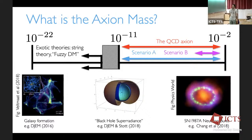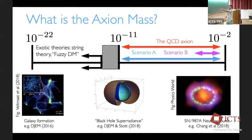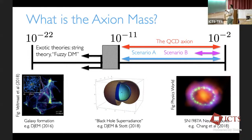For the QCD axion, M is fixed uniquely in terms of F. In scenario B with no free parameter, fixing the dark matter density predicts the axion mass. For an axion-like particle where M and F are unrelated, you can live anywhere in parameter space. We're going to talk about that for the next hour.